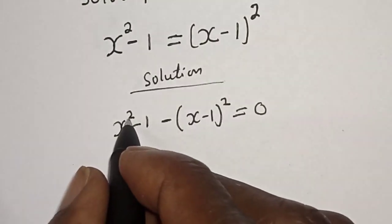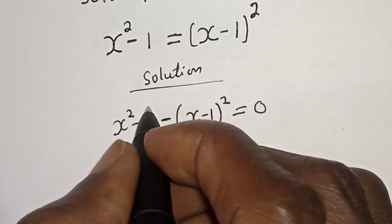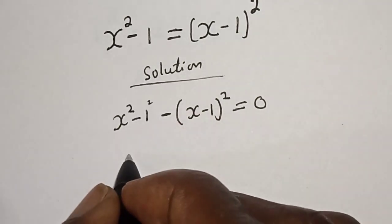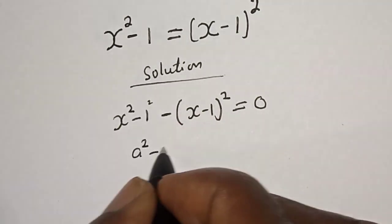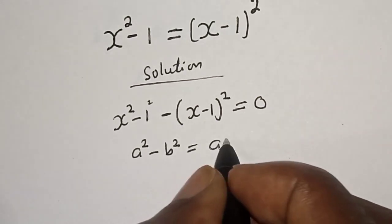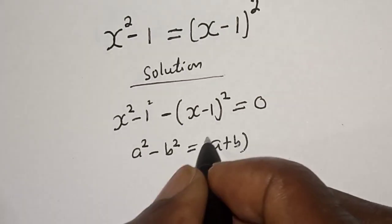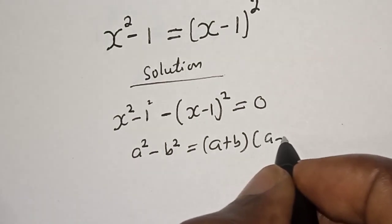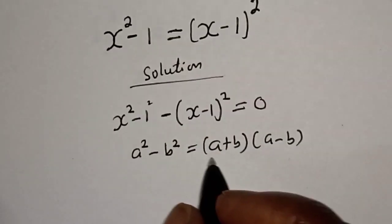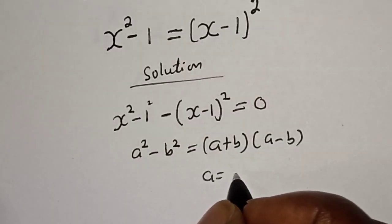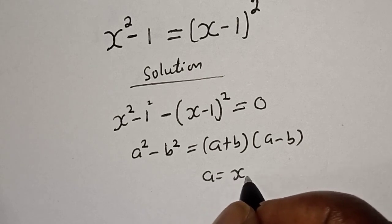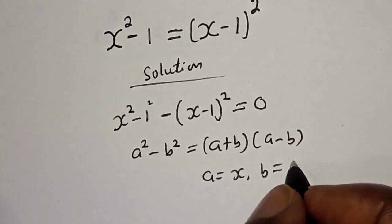Then x squared minus 1, this is also 1 squared. That is a squared minus b squared is equal to (a plus b) multiplied by (a minus b), where a is equal to x and b is equal to 1.